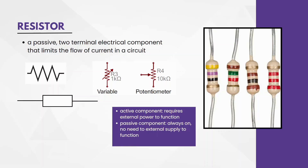In one of the previous videos, we have understood that a resistor is a component that opposes the flow of current. These are the different ways we can represent a resistor. This indicates it is a variable resistor — another name for it is a rheostat — and this means it is a potentiometer. A resistor is defined as a passive two-terminal electrical component that limits the flow of current in a circuit. If you are wondering what a passive component is, components can basically be divided into two types: active component and a passive component.